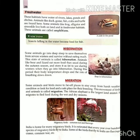Second, fresh water. These habitats have water of rivers, lakes, ponds and ditches. In asthaano mein nadiyan, jheel, talaab aur khandak ka paani aata hai.